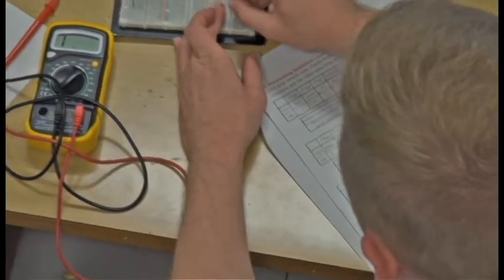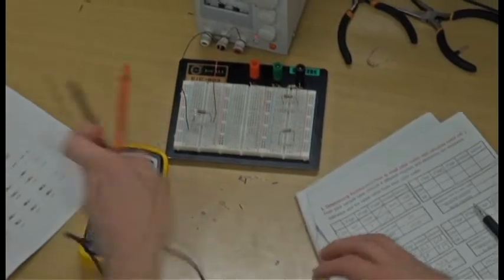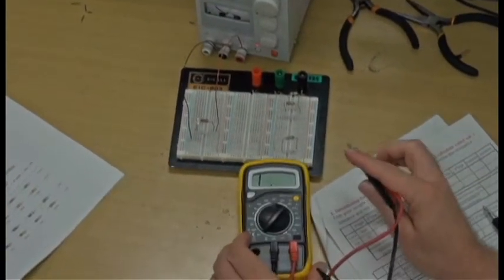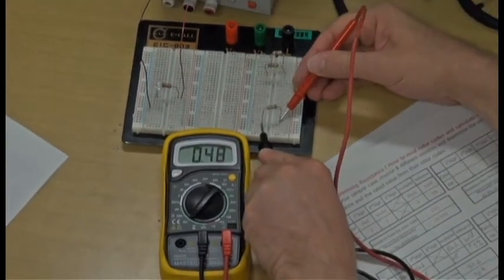Now let's measure that with the multimeter. Be sure the multimeter is set to the 3000 ohms range.